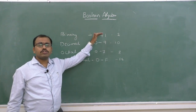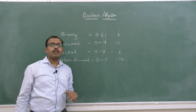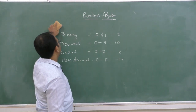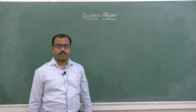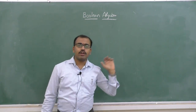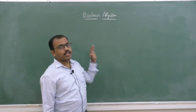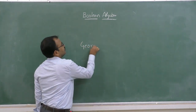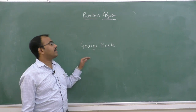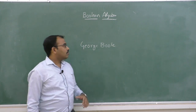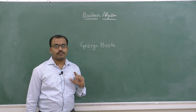In binary number systems, we will use 0s and 1s only. Now let us recall the definition of Boolean algebra. What do you mean by Boolean algebra? It is a branch of algebra, it deals with binary numbers. Why it is called Boolean algebra? Because it was discovered by mathematician George Boole. So Boolean algebra is a branch of algebra, it deals with binary number systems.